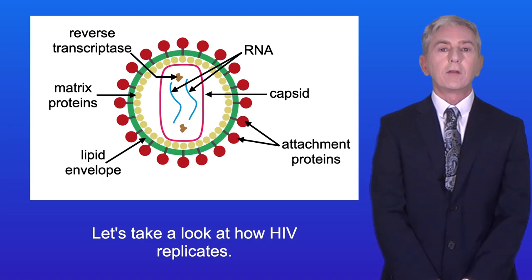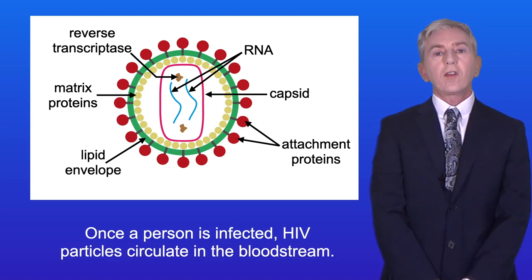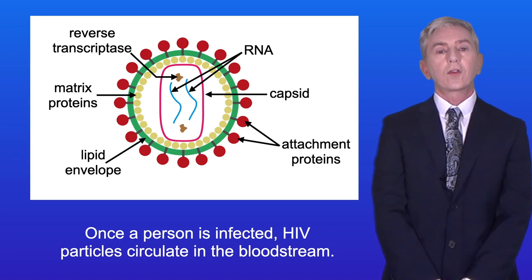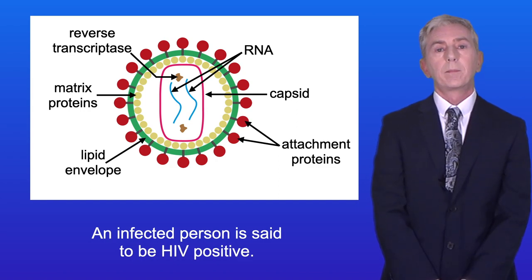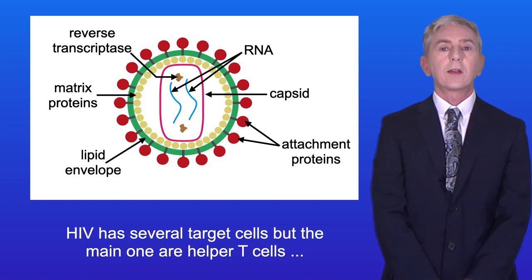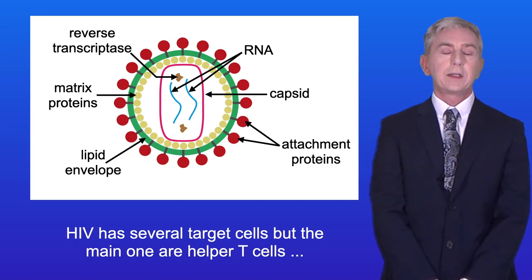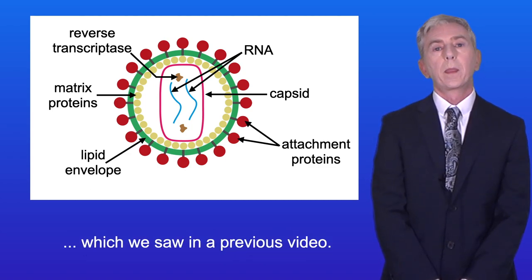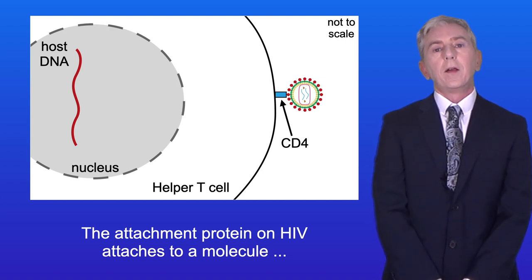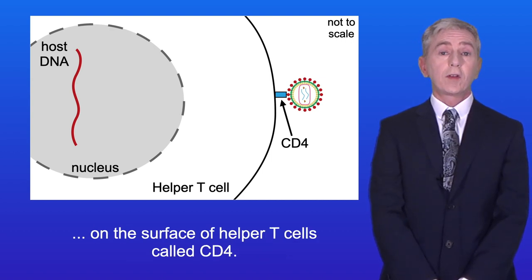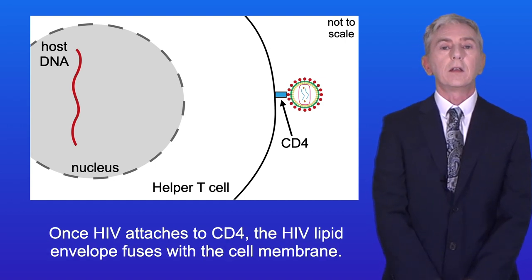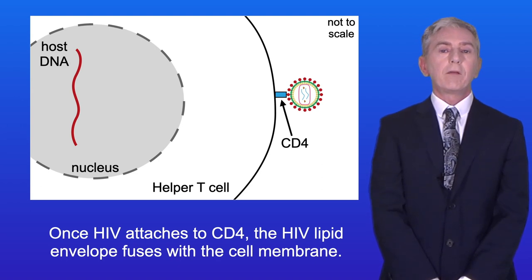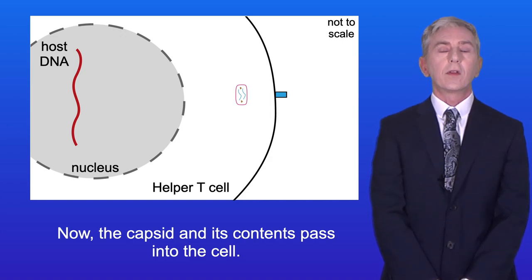Let's take a look at how HIV replicates. Once a person is infected, HIV particles circulate in the bloodstream, and an infected person is said to be HIV positive. HIV has several target cells, but the main ones are helper T cells, which we saw in a previous video. The attachment protein on HIV attaches to a molecule on the surface of helper T cells called CD4. Once HIV attaches to CD4, the HIV lipid envelope fuses with the cell membrane, and the capsid and its contents pass into the cell.